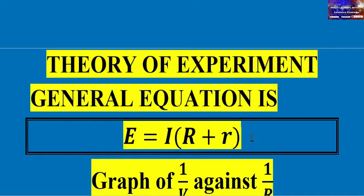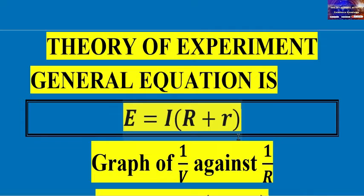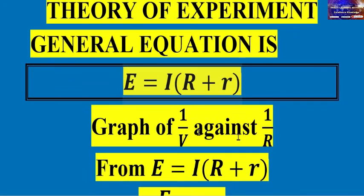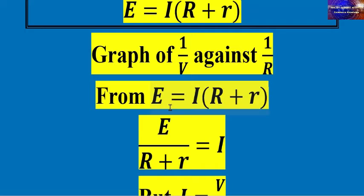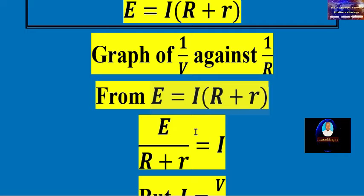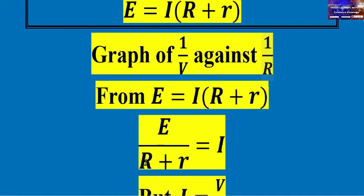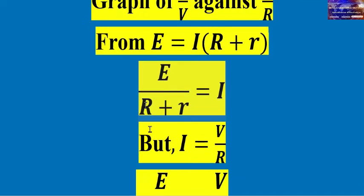You have to derive the theory by considering the nature of the graph, which is 1 over V against 1 over R. You drive this from the general equation: EMF is equal to current times (resistance plus internal resistance). To get the form 1 over V against 1 over R, you proceed as follows: current equals EMF over (R plus r).